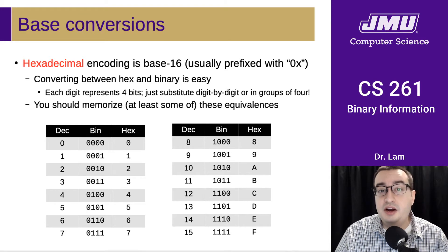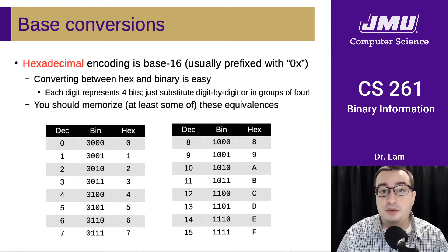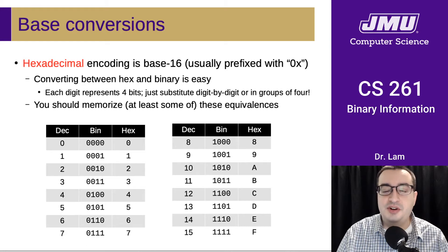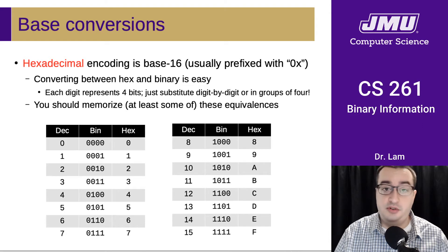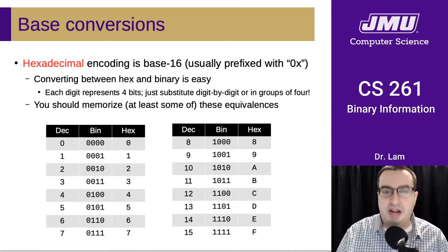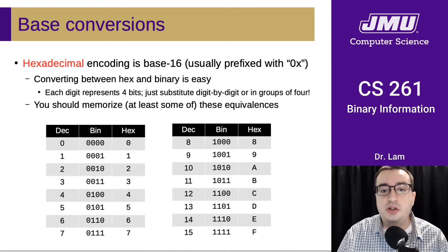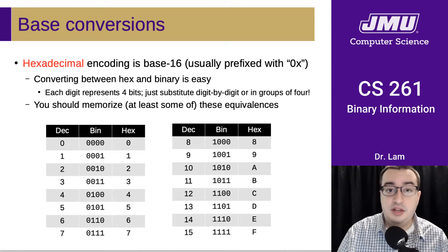The higher the base, the more values you can encode using a single digit, right? Because there are more possible values for that digit. Because binary is sort of the smallest number of digits in a positional number system — you do have base one, but that's a little bit different — you end up with really long numbers in binary. And so it's really cumbersome to work with binary numbers directly. And so in computer science and in the study of systems, we generally abbreviate binary numbers by writing them in hexadecimal instead. So hexadecimal just means base 16.